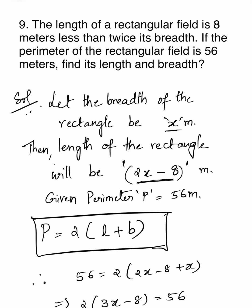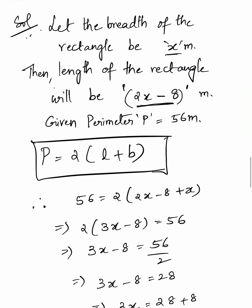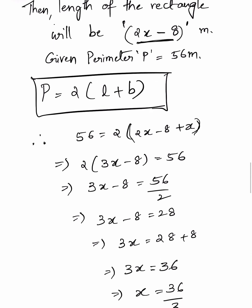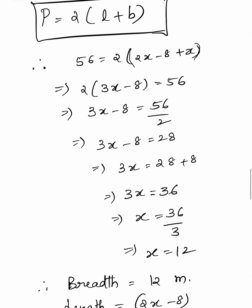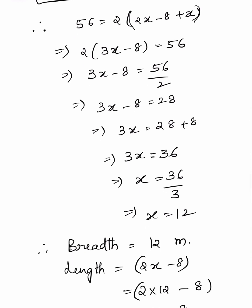Given perimeter P equals 56 meters. Using the formula P equals 2 into (L plus B): 56 equals 2 into (2x minus 8 plus x), which gives 2 into (3x minus 8) equals 56. Therefore, 3x minus 8 equals 28. So 3x equals 28 plus 8, which is 36, and x equals 36 divided by 3. Therefore, x equals 12.